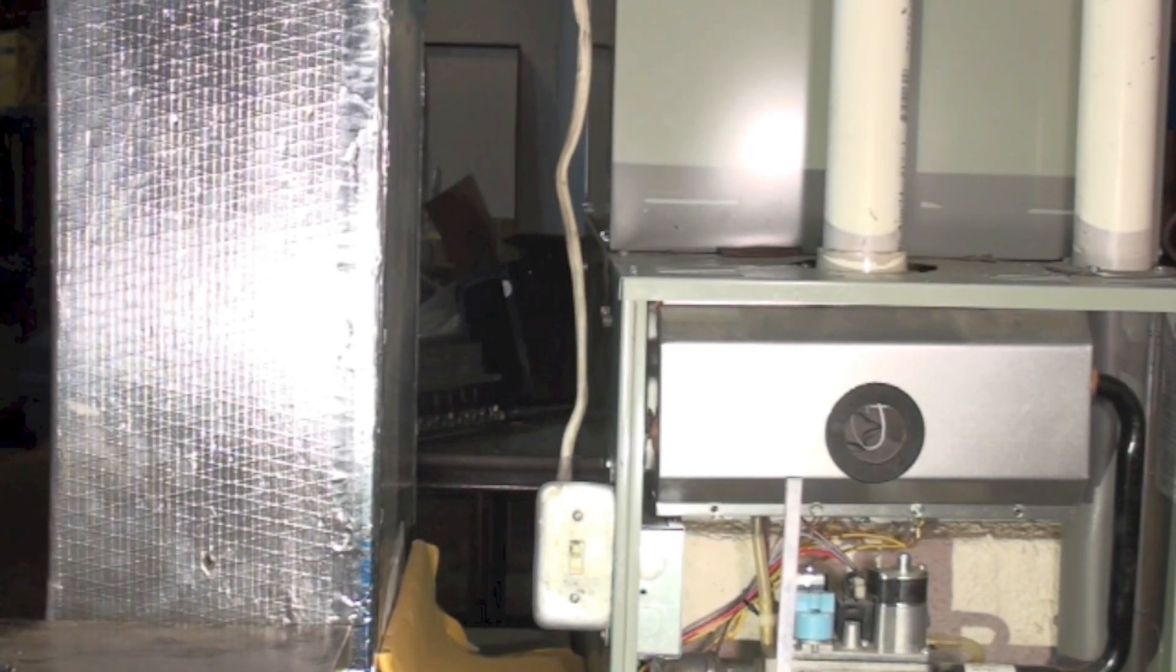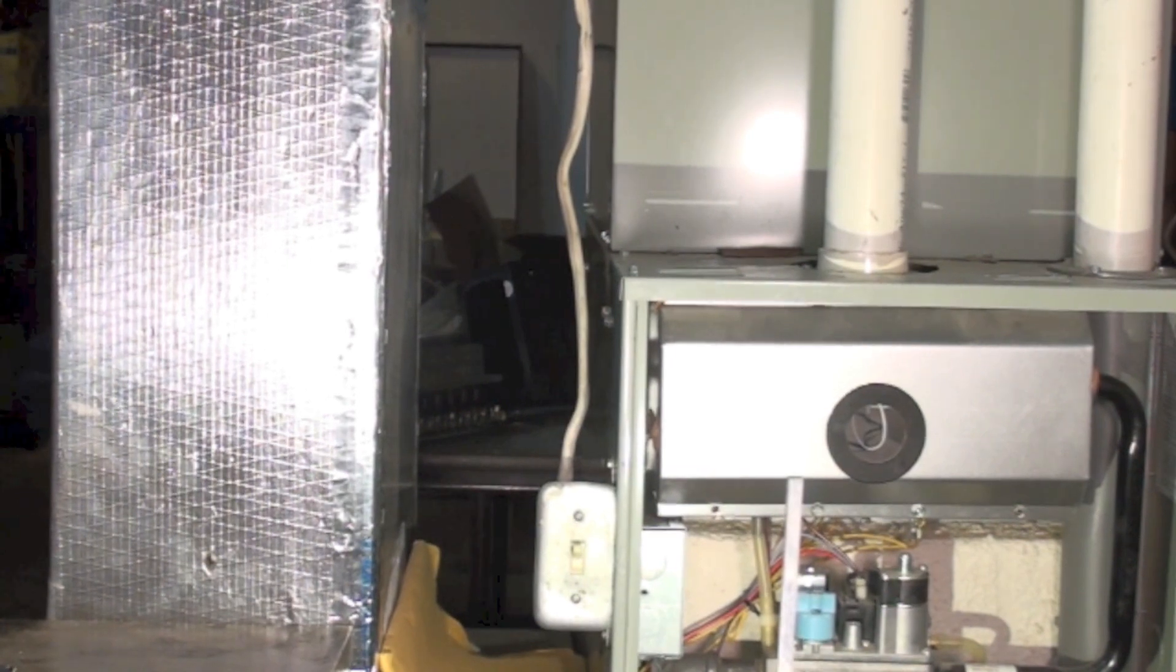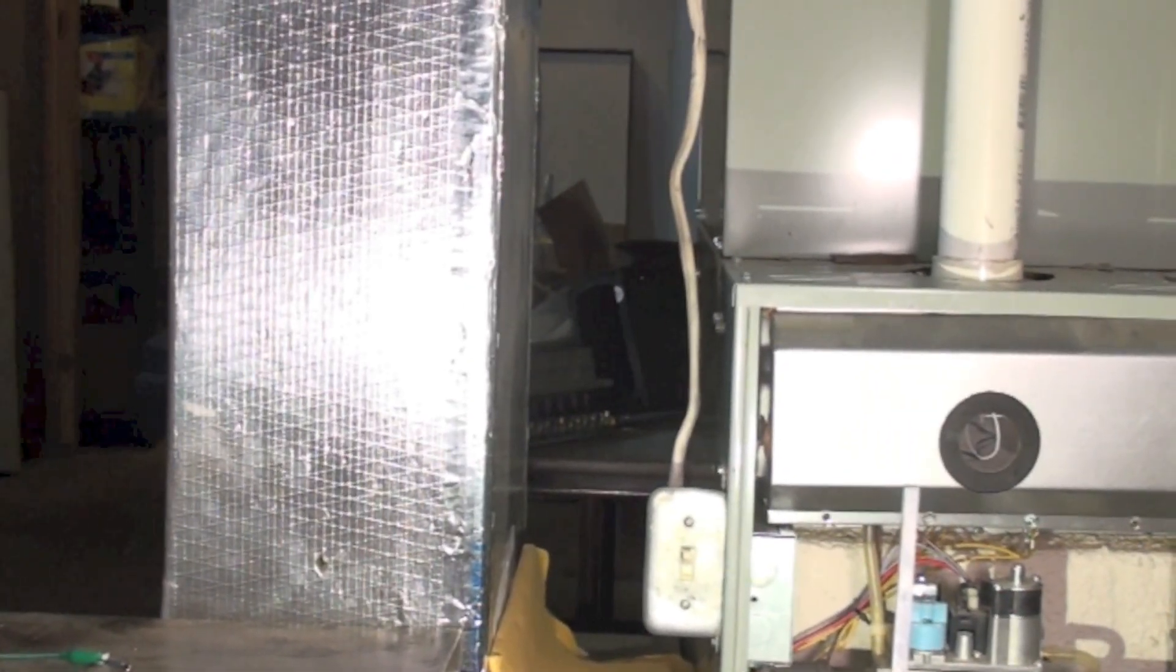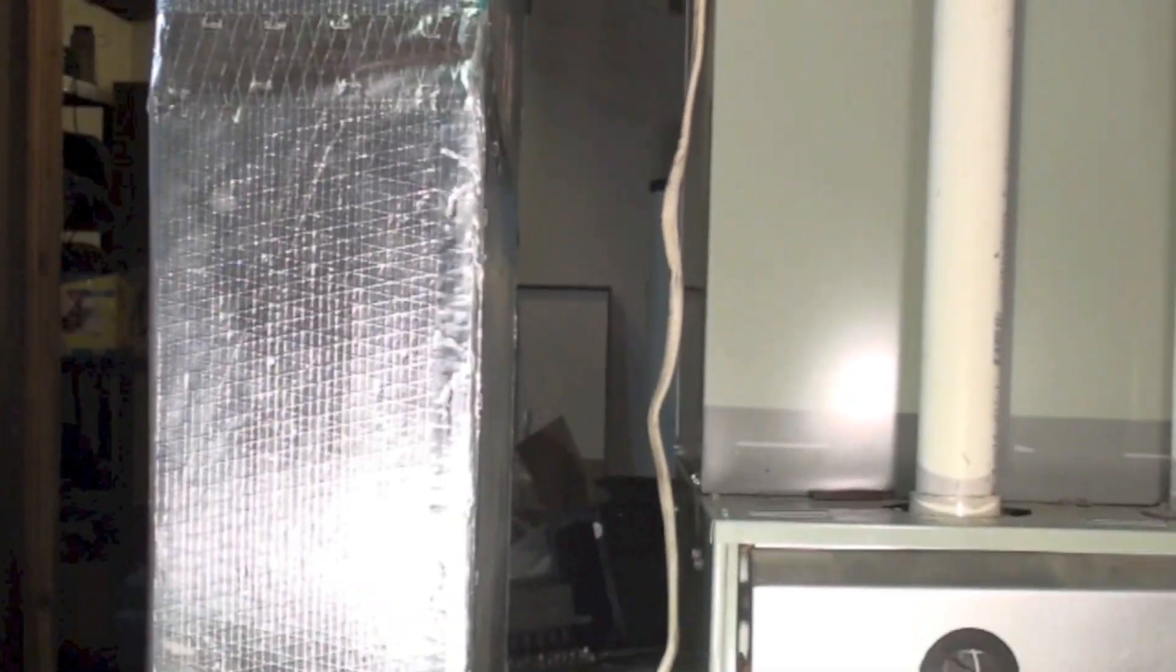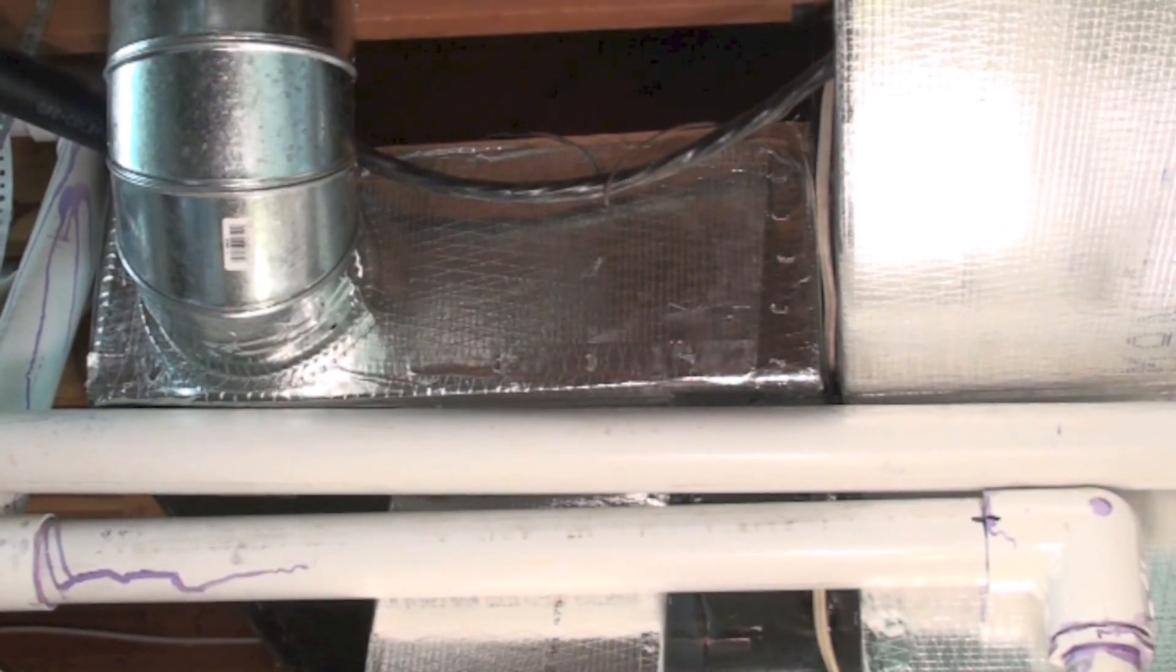Okay, we're going to do a few tests on this ductwork to see what the static pressure is throughout different parts of the duct. On the left you can see that's a return air drop coming from up there, and that is your return air trunk line.